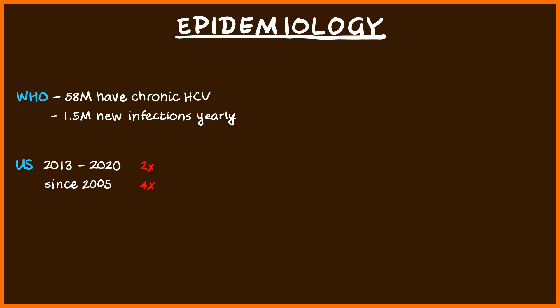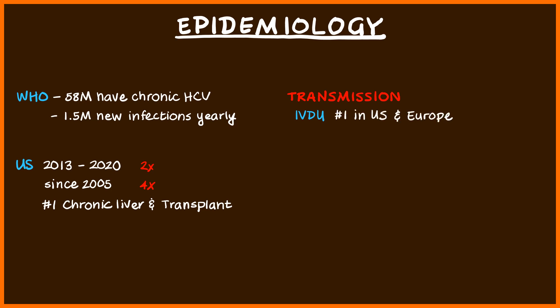This problem is continuing to grow in the US, and this is largely due to the opioid epidemic. It continues to be the number one cause of chronic liver disease and the number one cause for transplants. As far as transmission goes, it is primarily through blood. IV drug use is still a very high risk — it's actually the number one cause of hepatitis C in the US and Europe, accounting for almost all new infections. Studies have shown up to 50% to 90% of IV drug users have serological evidence of infection.